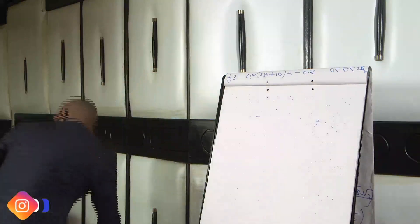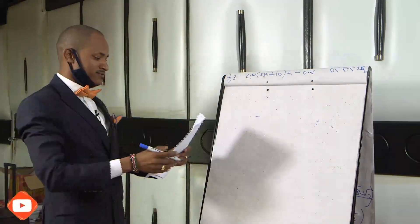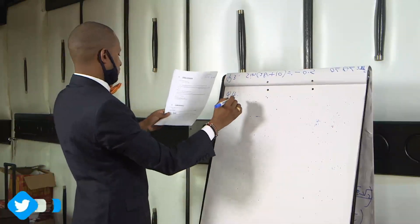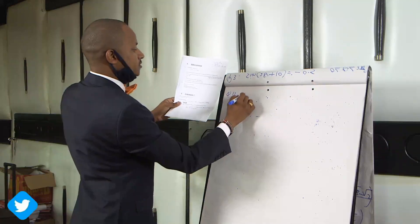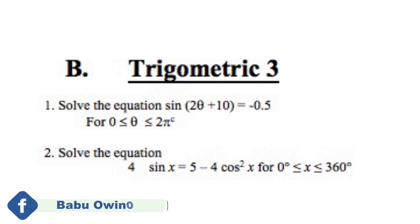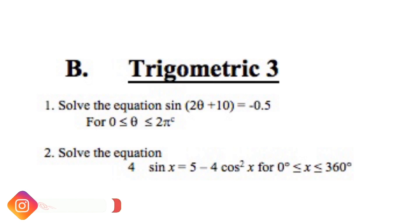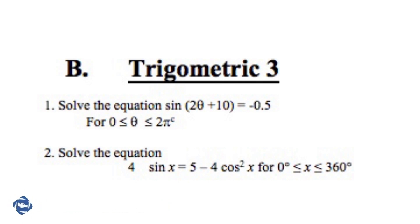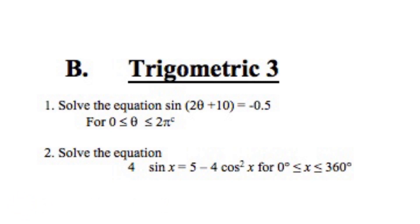We proceed to our next question, still on trigonometry. Question number 4. We are told to solve the equation 4 sin x = 5 − 4 cos²x, for angles where x is greater than or equal to 0 degrees and less than or equal to 360 degrees.